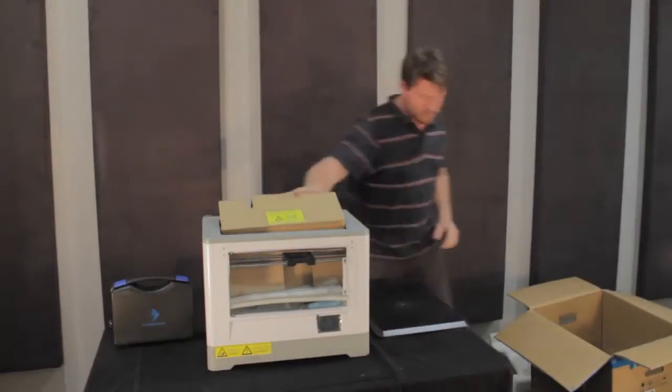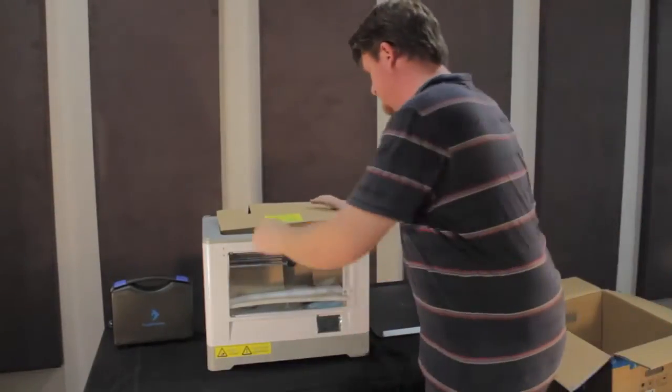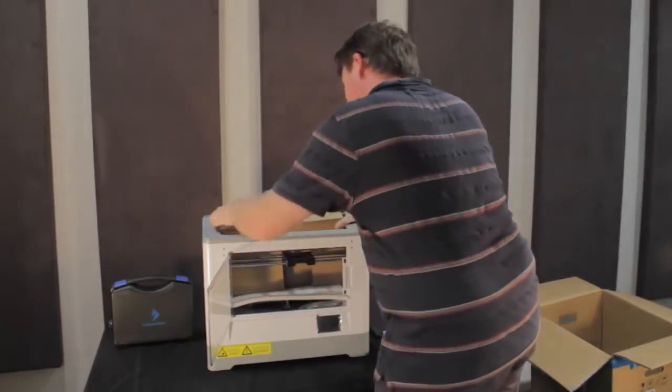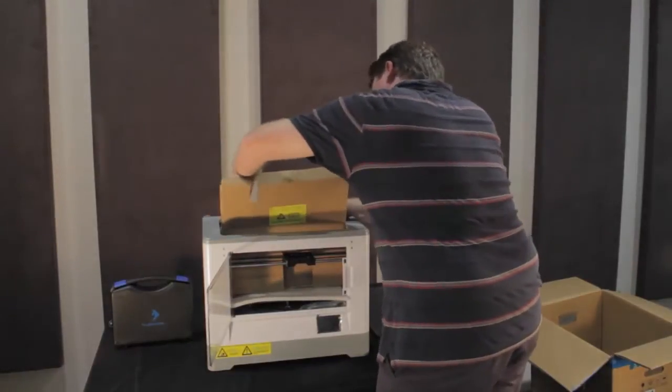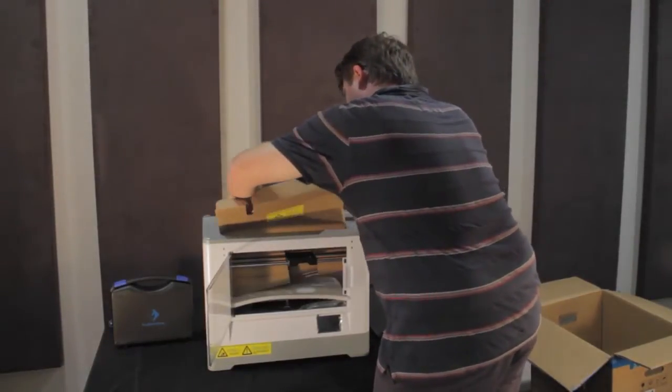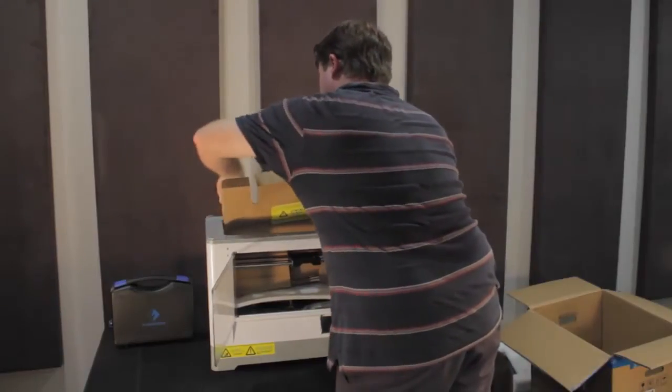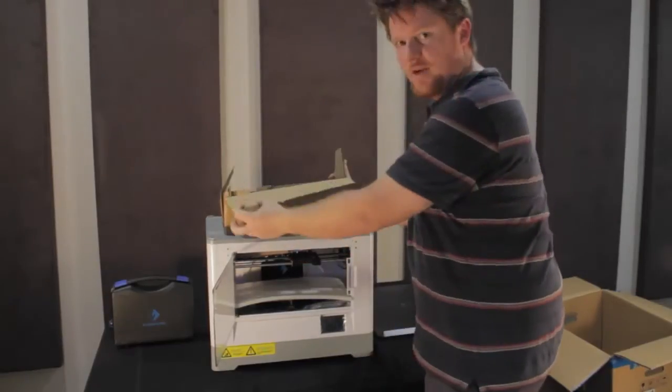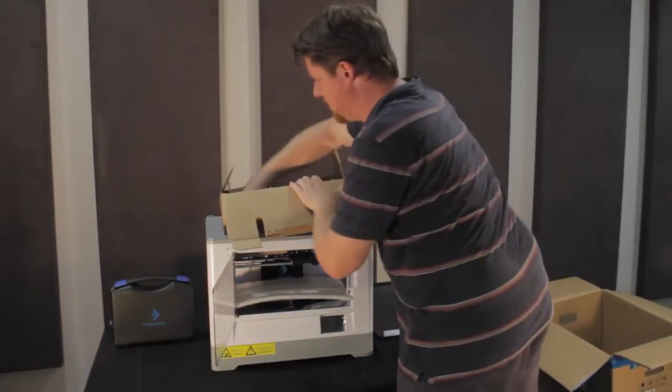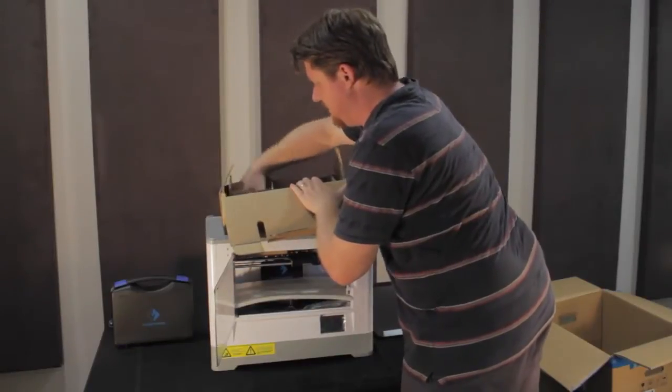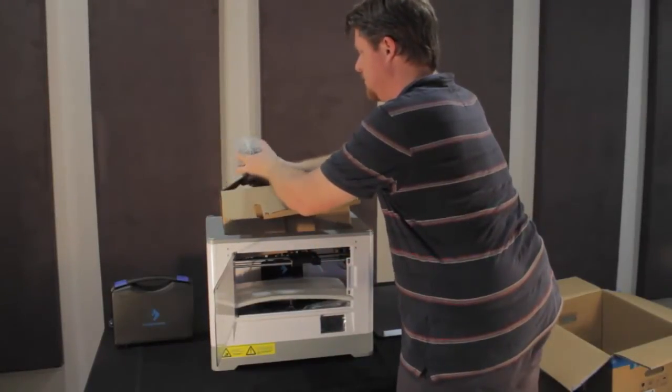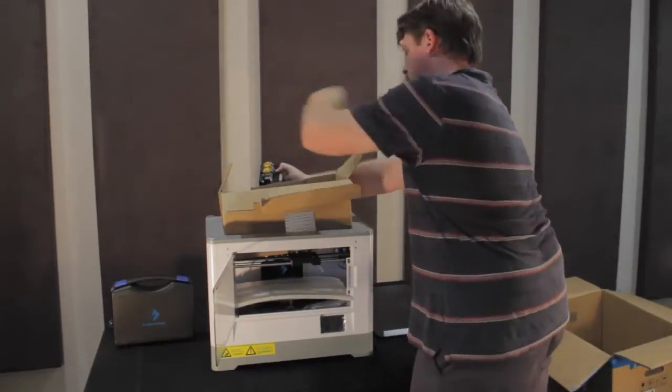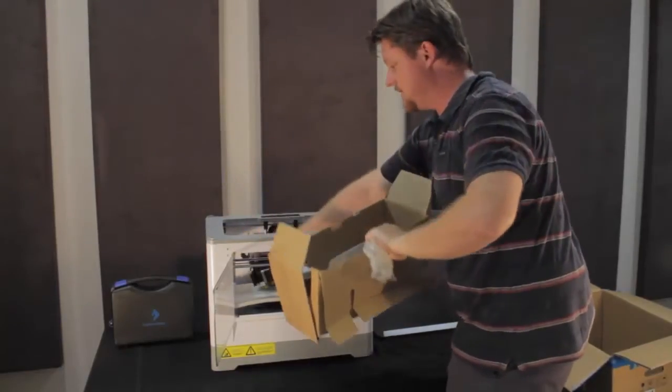It comes with a couple of filaments so we'll get those boxes out. Now you have to be careful with this one because part of it is still attached to the Dreamer. This box has the extruders unit, dual extruders. So we need to take that out of the box before we get the box out itself. We can place that back down.